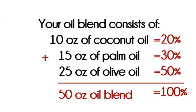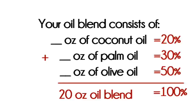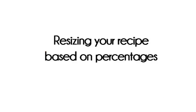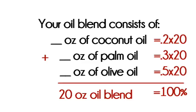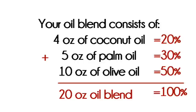So why would you need to know this? Because it makes increasing or decreasing while keeping your master recipe exact. Say you had a mold that only held 20 ounces of oils — we can easily calculate the recipe based on the percentage. All we need to do is multiply the percentage by the new oil blend size of 20. And this can be done the exact same way for increasing your oil blend.